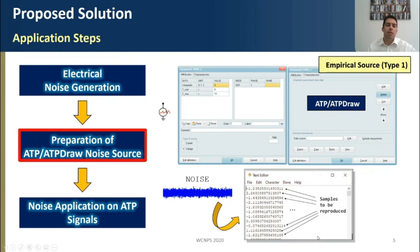Then, in the second step, we take this noise signal, and we upload its samples into the empirical source type 1 available in ATP ATPDraw, in such a way that we can reproduce into the ATP environment the obtained noise signal.